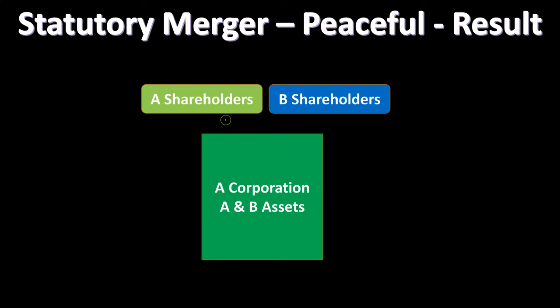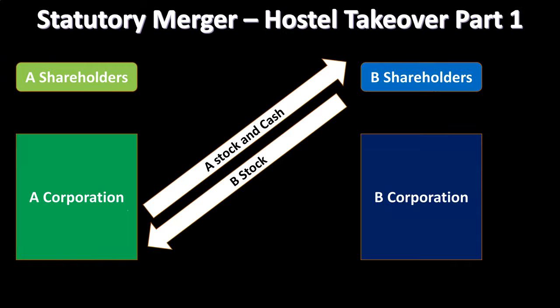The A shareholders still own company A. Any shares that were part of the payment — if A paid cash and also paid shares, which is common — those shares would go to the shareholders of B when B was liquidated. So now you could have both A shareholders and B shareholders having some ownership interest, depending on the negotiation, and you're left with one company: company A, which includes A's assets minus any consideration given, plus the assets of B purchased in the merger.